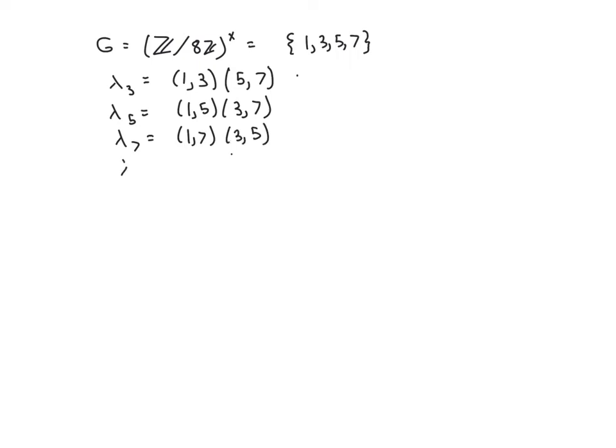And of course, lambda 1 is going to be the identity permutation. And so here we have lambda sending G to S, 1, 3, 5, 7. So a subgroup of S, 1, 4. So a subgroup of S_4. The corresponding subgroup is going to be the identity permutation and these other permutations.